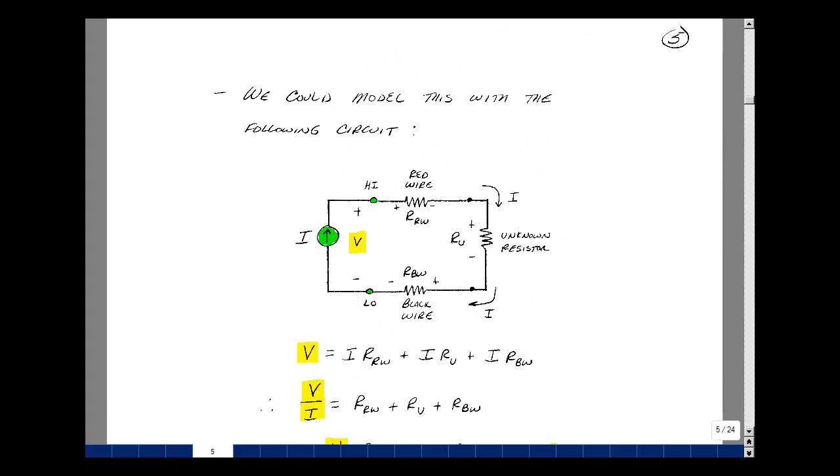So what's shown here is an equivalent circuit of the previous page. So here we've got our current source. We're using a voltmeter to measure the voltage across the face of the instrument. And then coming out of the high terminal, I had a red wire hooked up to my unknown resistor, and then a black wire coming back to the low side.